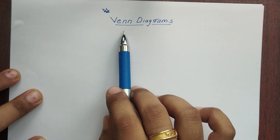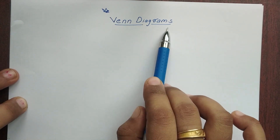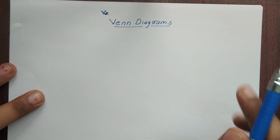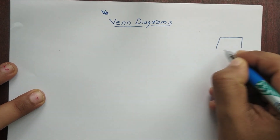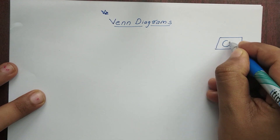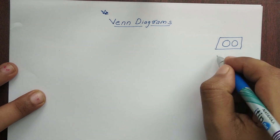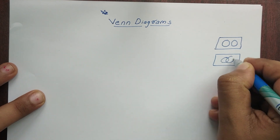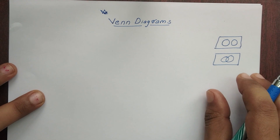This is a Venn Diagram. If you have a rectangle, it will have a little circle inside. It will be closed. If you have these circles, they can be separate items or they can overlap.